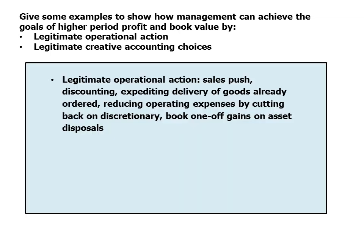Give examples of legitimate operational actions to achieve higher period profit and book value. These include sales push discounting, expediting delivery of goods already ordered to get revenue into the current period, reducing operating expenses by cutting discretionary spend such as training, and booking one-off gains on asset disposals. All of these increase profits in the short term.